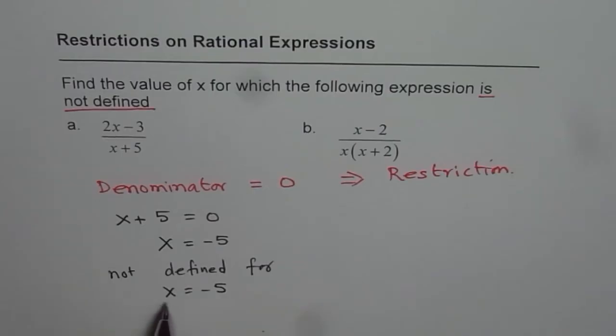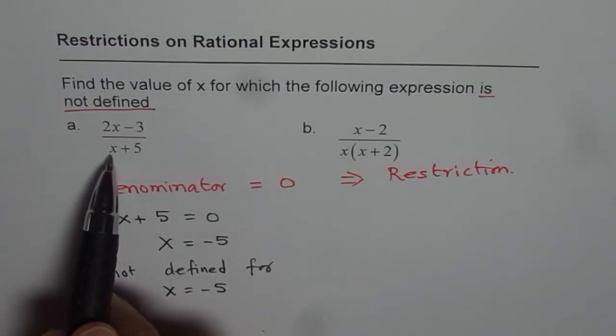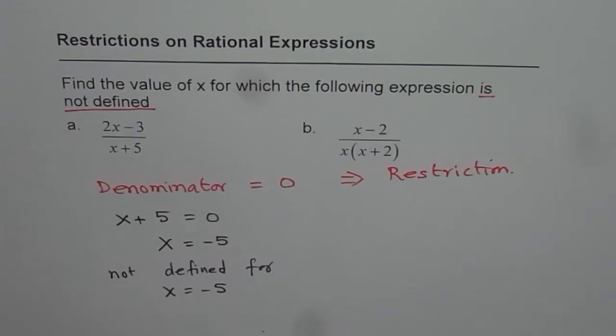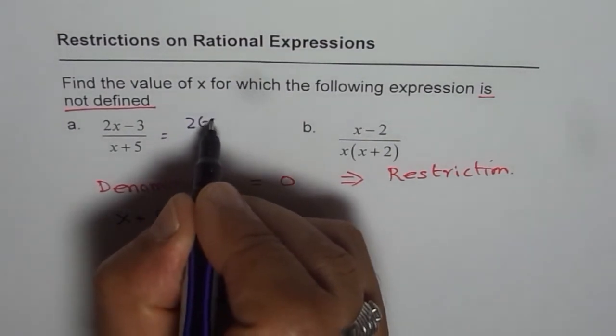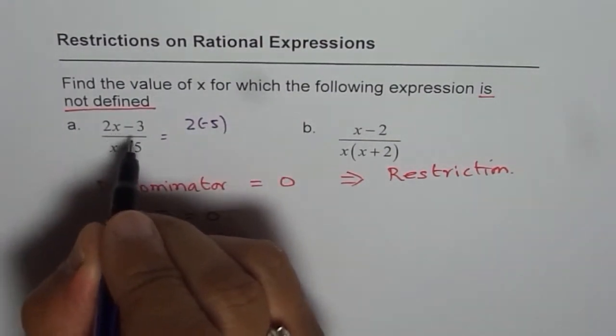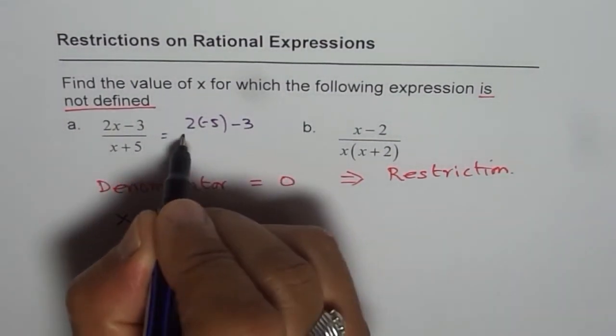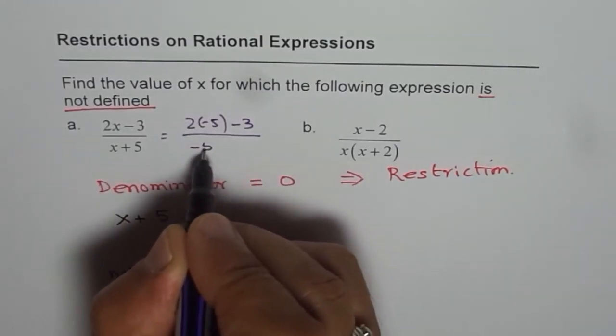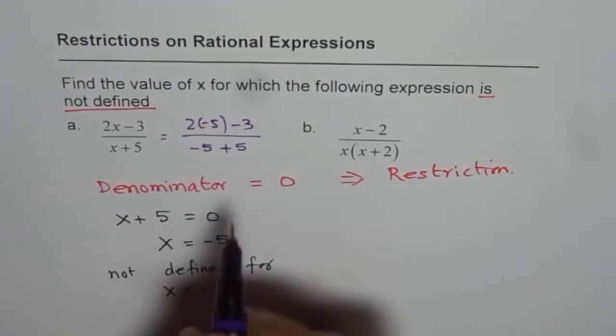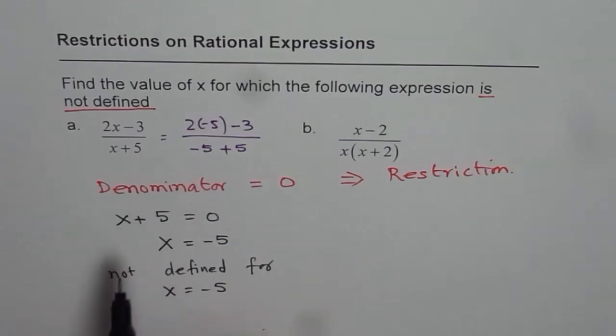You will appreciate if I substitute x as minus 5 here then what do we get? We will get 2 times minus 5 minus 3 divided by minus 5 plus 5. Now what is minus 5 plus 5? It is 0.